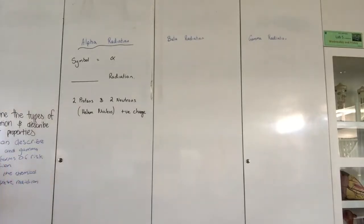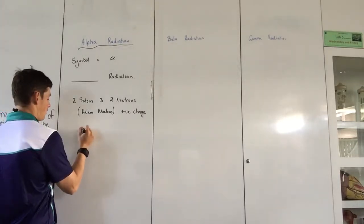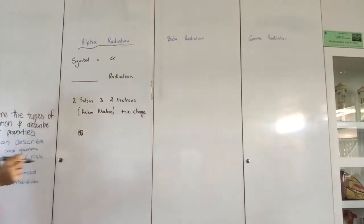So it has two protons and two neutrons, has a positive charge. This is the one that Ernest Rutherford fired through the gold foil. If you remember the experiment where he fired it through a very thin gold foil and almost all of them went through. This is the radiation that he fired through. He followed alpha particles through.